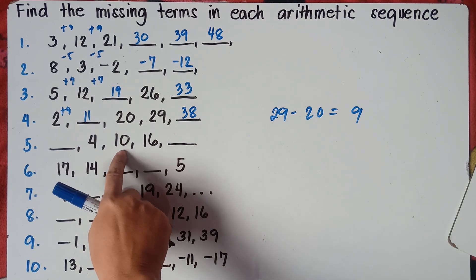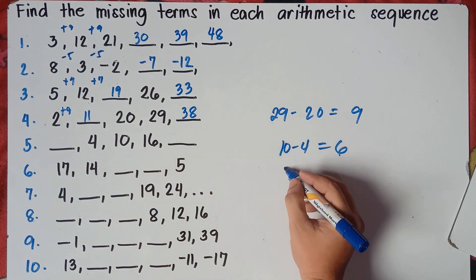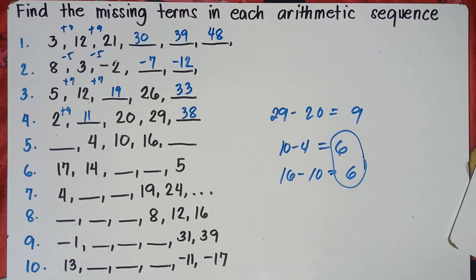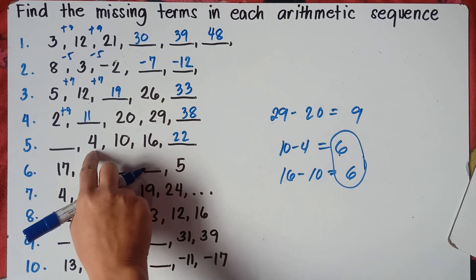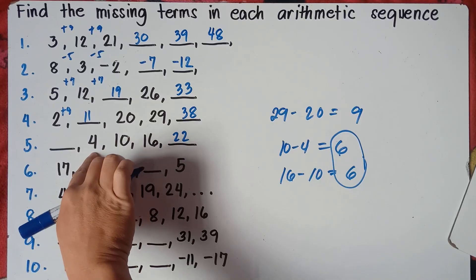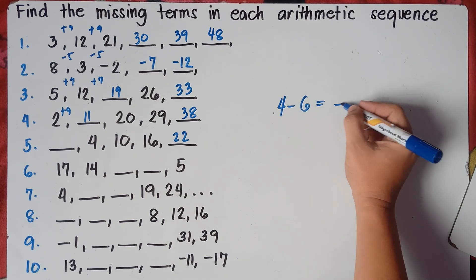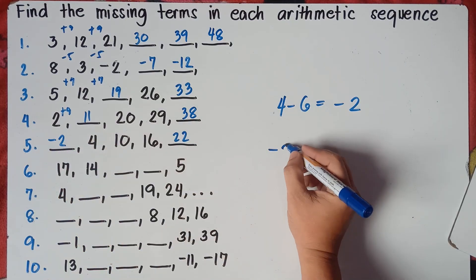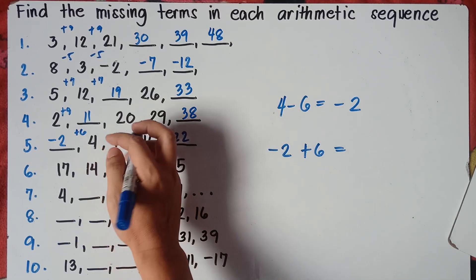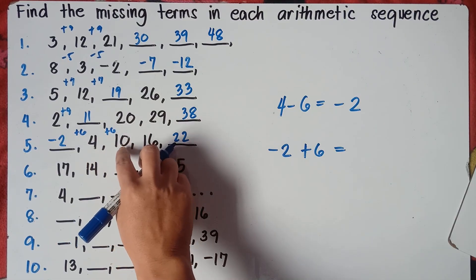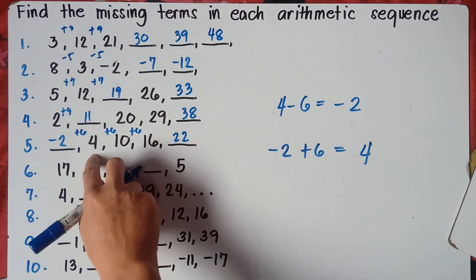Let's check number 5: third term minus second term — 10 minus 4 equals 6. Fourth term minus third term — 16 minus 10 also equals 6. So the common difference is 6. Then 16 plus 6 is 22 for the next term. To find the term before 4, we subtract: 4 minus 6 equals negative 2. Checking: negative 2 plus 6 is 4, 4 plus 6 is 10, 10 plus 6 is 16. Correct — the answer is negative 2.